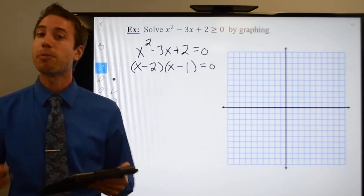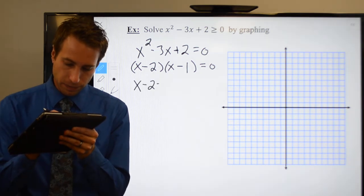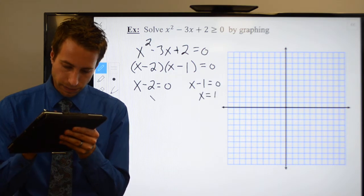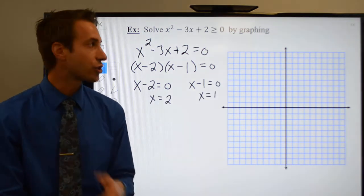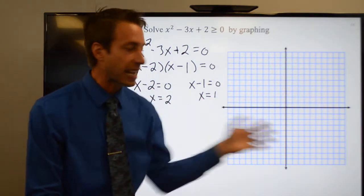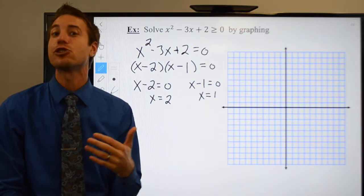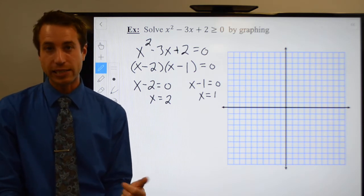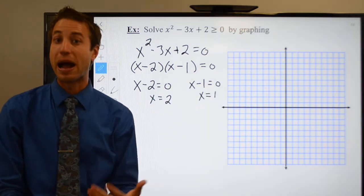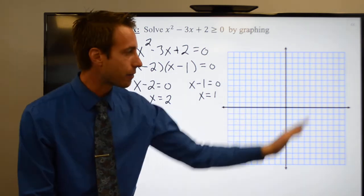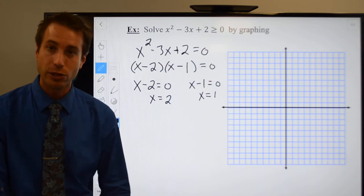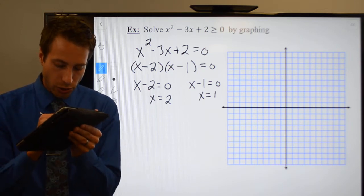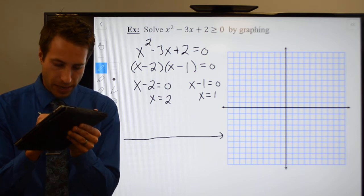Use the zero product property to split these guys up. Now, please be careful. When I say graph, I know it's confusing because I gave you a coordinate plane—I apologize. What we really need to do when I say graph is graph on a number line. Rather than give you a coordinate plane, I should have given you a number line. That's okay, you can draw your own. There's my number line.